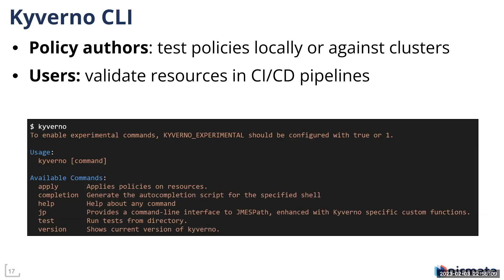The Kyverno CLI helps two personas. Policy authors can test policies locally against a resource they have, or against an active cluster without installing Kyverno, just to see what's going to happen. This lets you evaluate policies against your actual resources without having to extract all the resources into a file. Users can also validate their own resources even before they submit a PR.